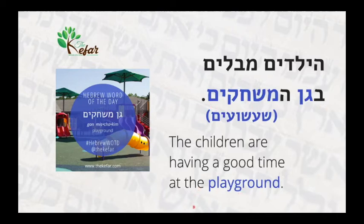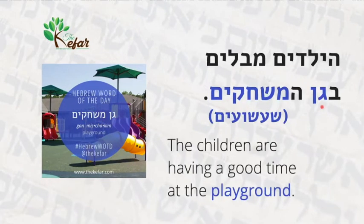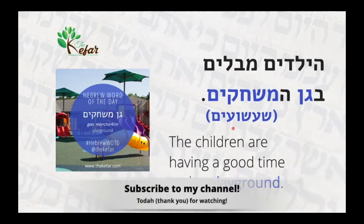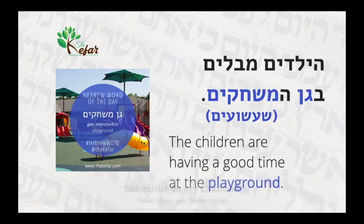You'll see this word here — this is Shashuim. Another word for Gan Mishakim is Gan Shashuim. Gan means 'a garden,' and Mishak from Mishakim means 'a game.' Shashua means 'entertainment' and can also refer to a game. So it's essentially like a garden of games or a garden of entertainment — that's how we say playground. You'll hear or see both Gan Mishakim and Gan Shashuim.